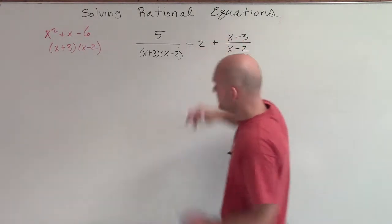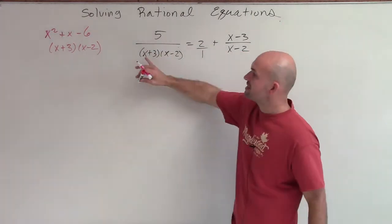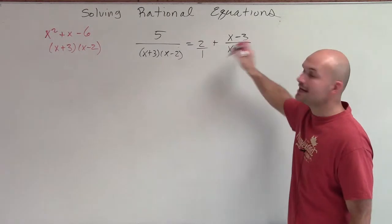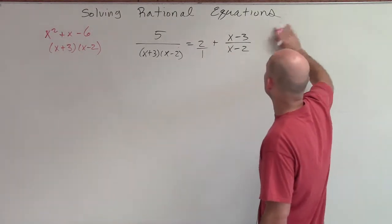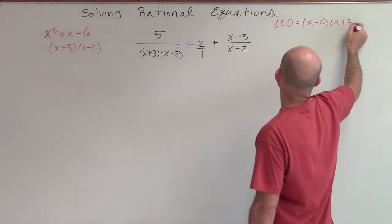Because we can see over here, this number 1 has a denominator of 1. But out of all our denominators, we have x plus 3, x minus 2, 1, and x minus 2. So we can determine that the LCD is just simply going to be x minus 2 times x plus 3.